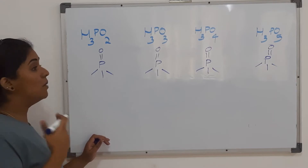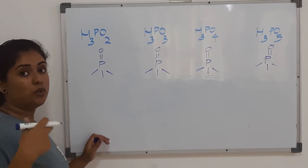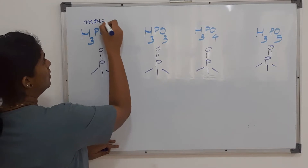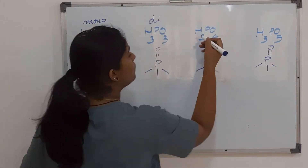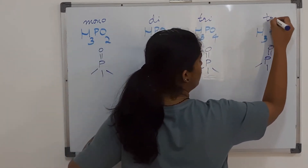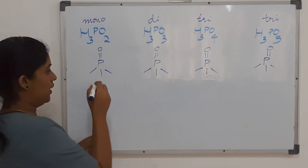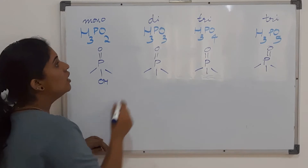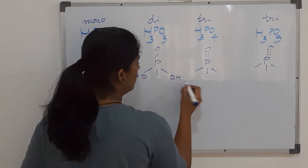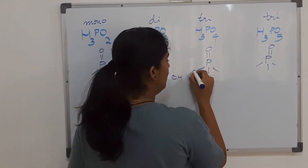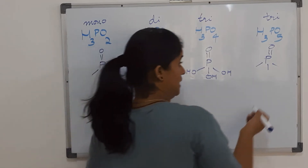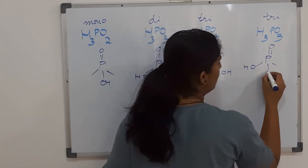Next, we need to understand how many OH units to add, based on the third point — basicity. H₃PO₂ is monobasic, H₃PO₃ is dibasic, H₃PO₄ is tribasic, and H₃PO₅ is also tribasic. Monobasic means one OH unit, dibasic means two OH units, and tribasic means three OH units — so for the tribasic structures all three remaining bonds are OH units.